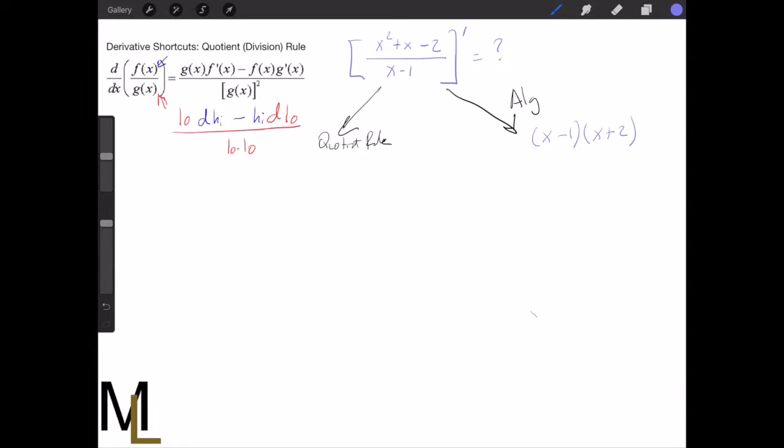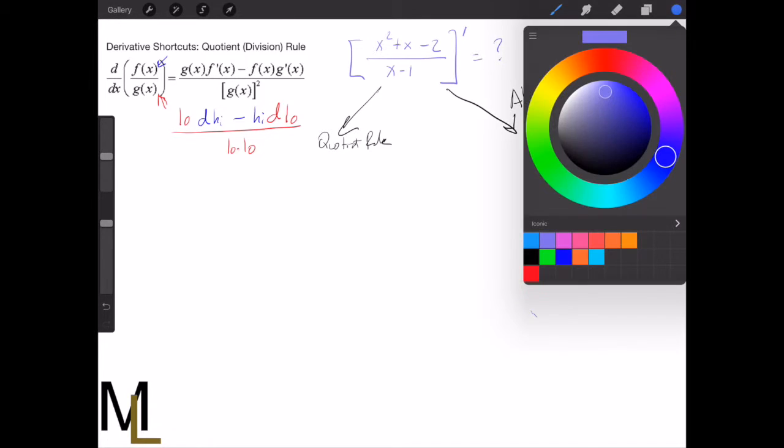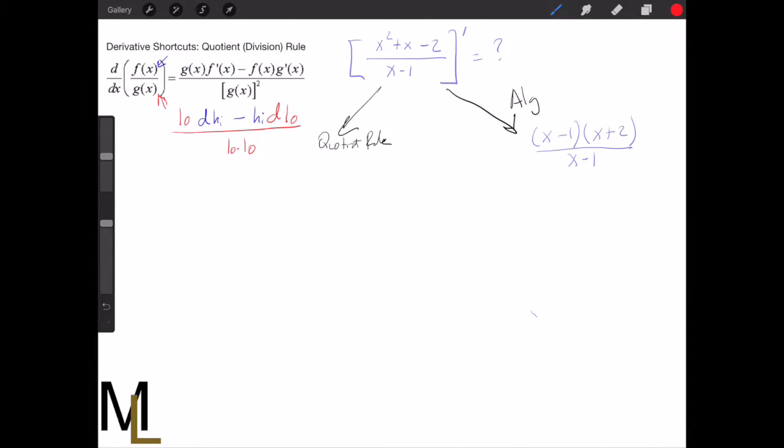So we factor it to x minus 1, x plus 2. And if you multiply this out, you would get the same numerator of that function. And the bottom is x minus 1. So what happens here is because we factored it nicely, we get a point discontinuity, and we can cancel those out. And we are left with x plus 2 derivative, which is just equal to 1.